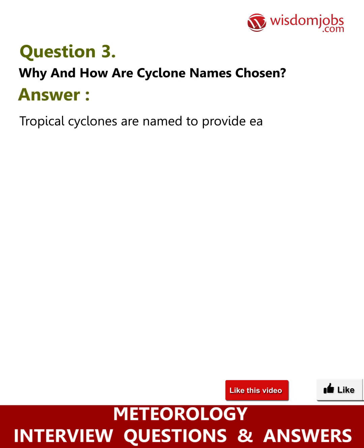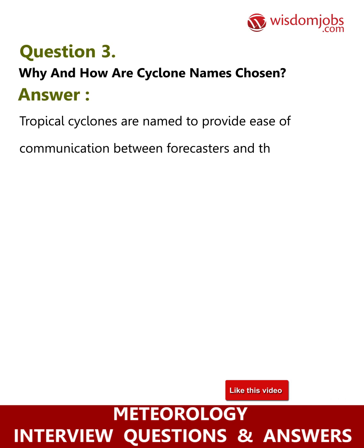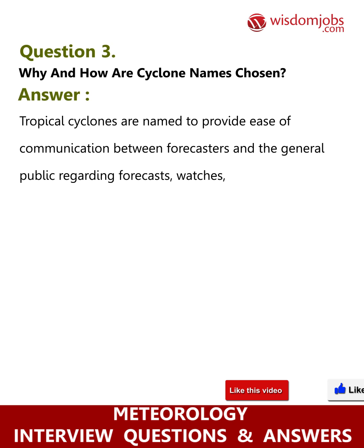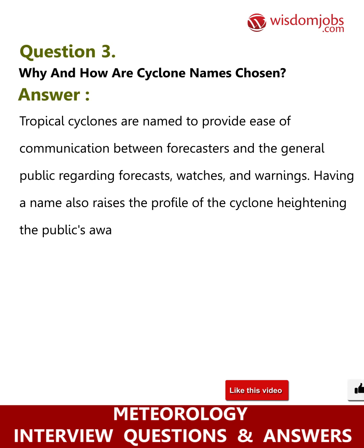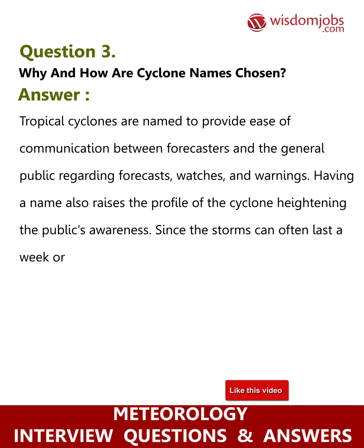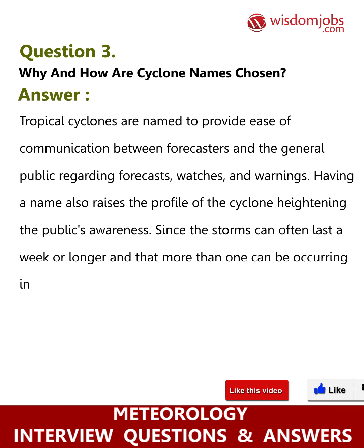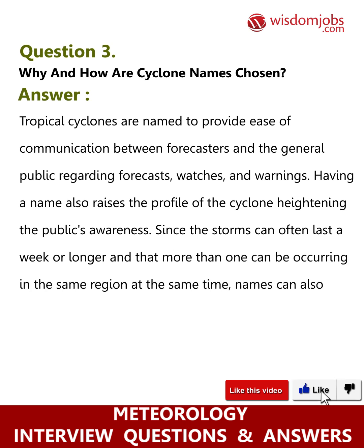Question 3: Why and how are cyclone names chosen? Tropical cyclones are named to provide ease of communication between forecasters and the general public regarding forecasts, watches, and warnings. Having a name also raises the profile of the cyclone, heightening public awareness, since storms can often last a week or longer and more than one can be occurring in the same region at the same time.